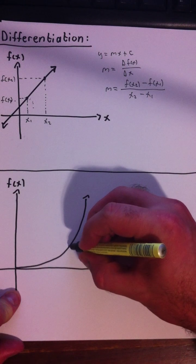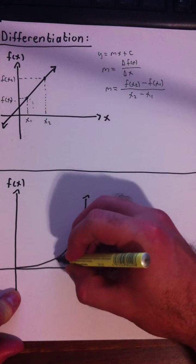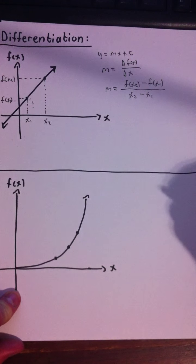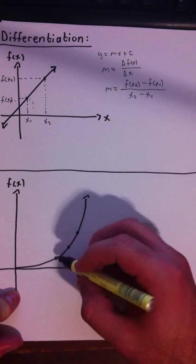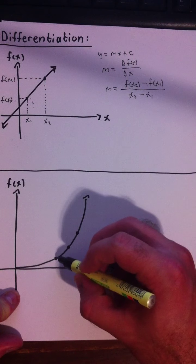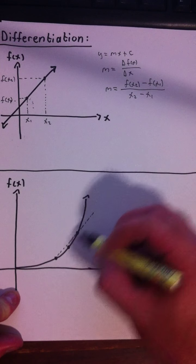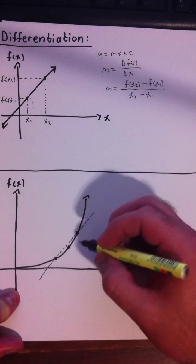If we want to find the gradient at this point here, we can approximate that by taking two points on either side of it, and drawing a straight line through them. So if we take these two points, and we draw a straight line through that, that'll give us some gradient.